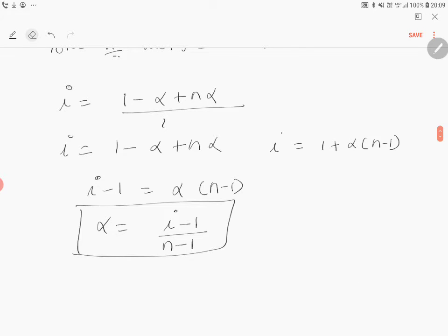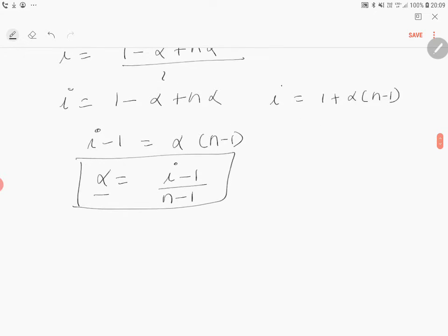This is for dissociation of solute. So degree of dissociation becomes i minus one by n minus one. Also, we have seen one formula in the previous videos that is van't Hoff factor is equal to the ratio between calculated molar mass and observed molar mass. So if I substitute the value of i here, what will I get?